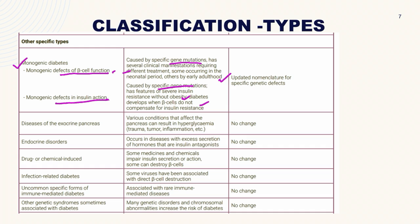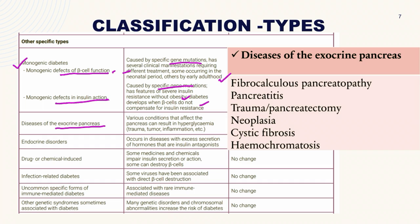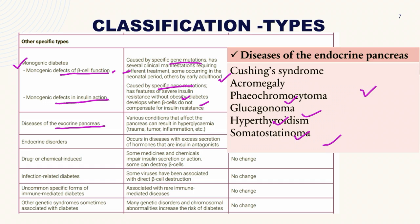Other specific subtypes include diseases of the exocrine pancreas: fibrocalculous pancreatopathy, pancreatitis, pancreatectomy, trauma of the pancreas, neoplasia, cystic fibrosis, and hemochromatosis. Endocrine disorders causing diabetes include Cushing's syndrome, acromegaly, pheochromocytoma, glucagonoma, hyperthyroidism, and somatostatinoma.